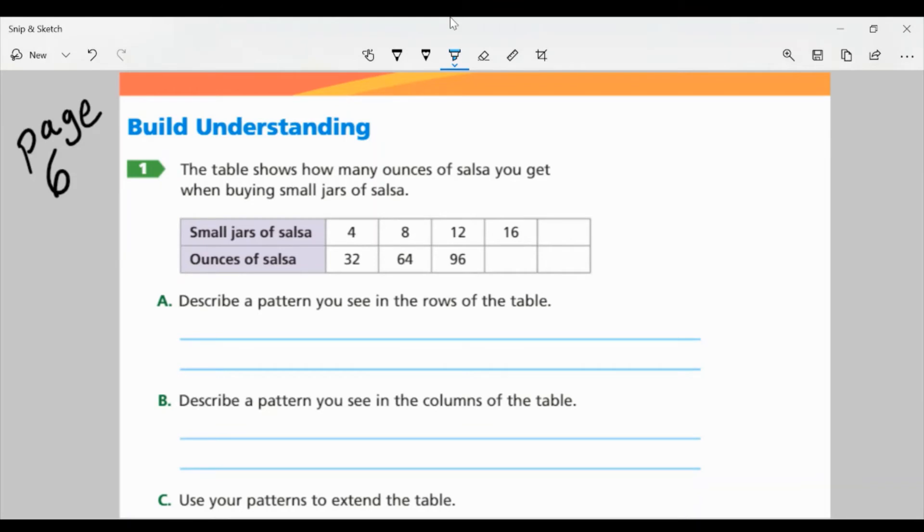Let's look at page six. This is the first part of your assignment for Monday, October 26. So let's look at the build understanding. The table shows how many ounces of salsa you get when buying small jars of salsa. So let's look at that first column, small jars of salsa. They have four, eight, 12, 16. Then we have a blank box. The ounces of salsa, 32, 64, 96. And we're left with two blank spots there.